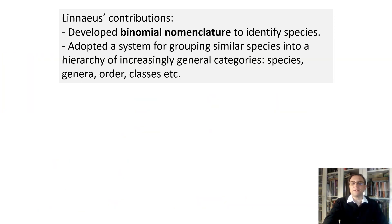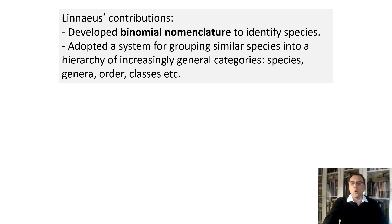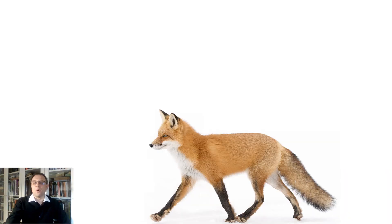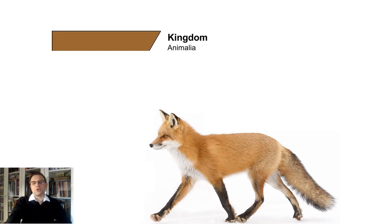Carl Linnaeus adopted a system for grouping similar species into a hierarchy of increasingly general categories: species, genera, order, classes, etc. For example, let's take a fox and look at which groups it belongs to. We will start with the largest taxonomic group of Linnaeus's time — the kingdom — the most inclusive group of that time.